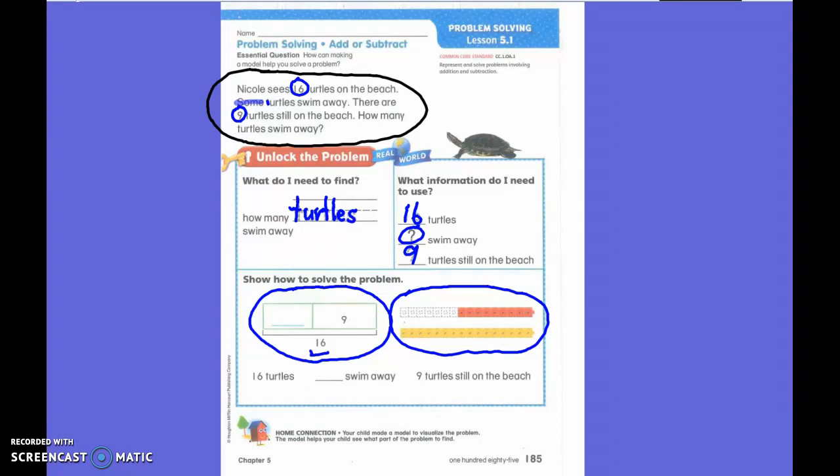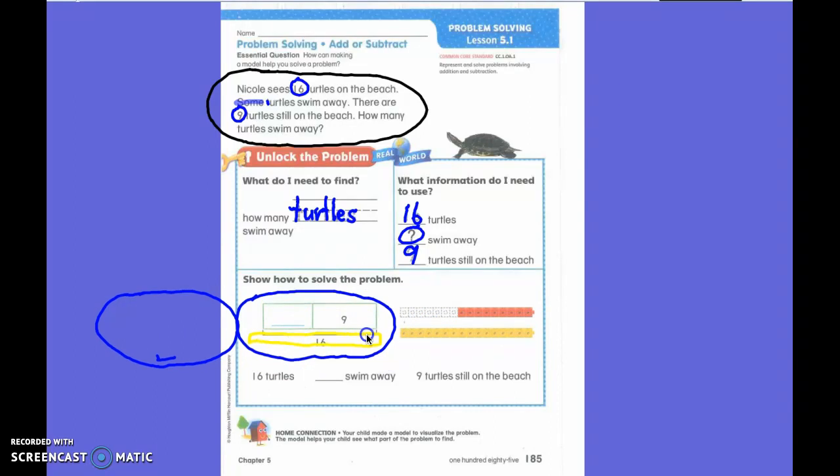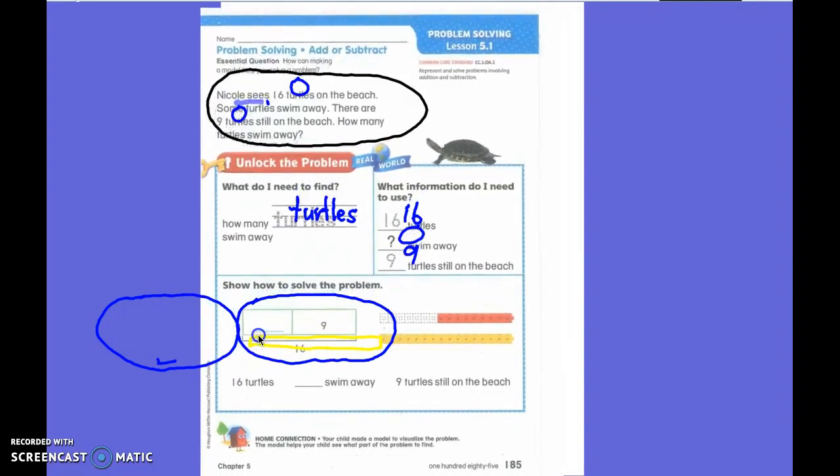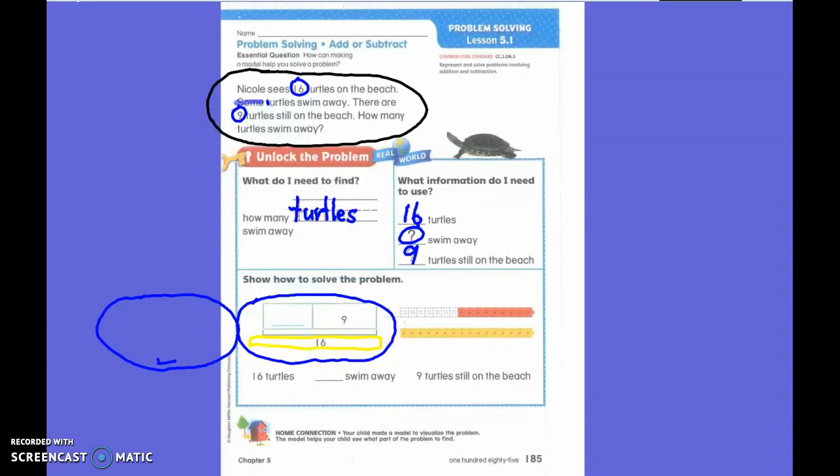So what I am trying to do is instead of drawing all sixteen of these I am going to just make a bar model. So this whole thing right here equals sixteen.